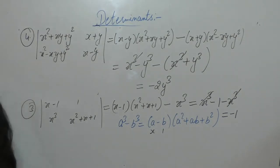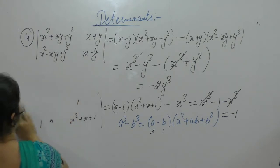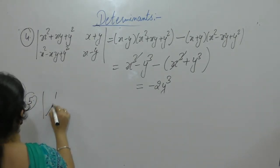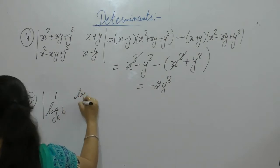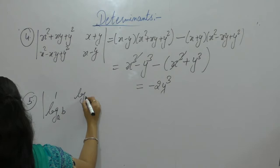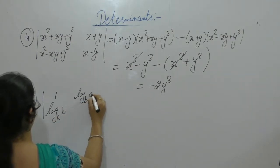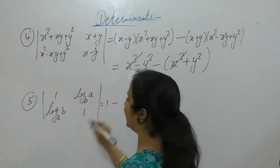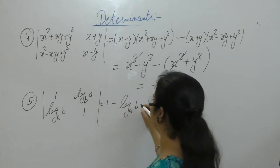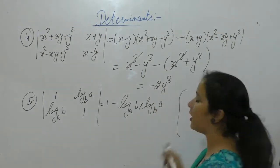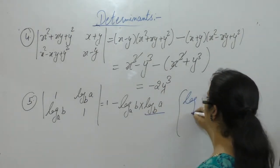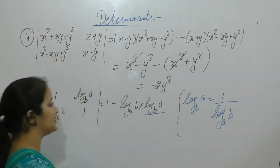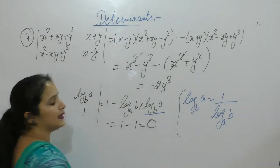Next: evaluate the determinant with 1, log_a(b), log_b(a), 1. Solving: 1 into 1 is 1, minus log_a(b) into log_b(a). Now log_b(a) equals 1 over log_a(b), so they get cancelled. So 1 minus 1 equals 0.